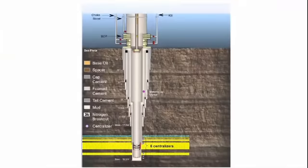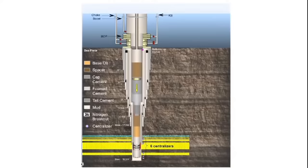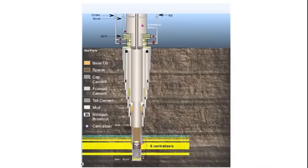During the afternoon of April 19, the cement job started. Cement is used as a barrier to seal the wellbore from the reservoir sand. Nitrified foam cement was pumped into the annulus and non-foam cement was pumped into the shoe track. At this point, the pump pressure was bled off and it appeared that the check valves and the float collar were holding.